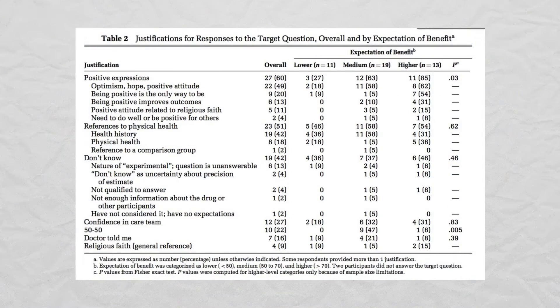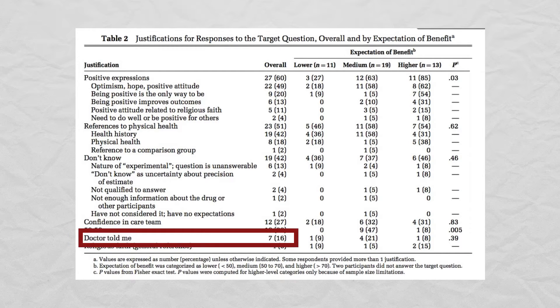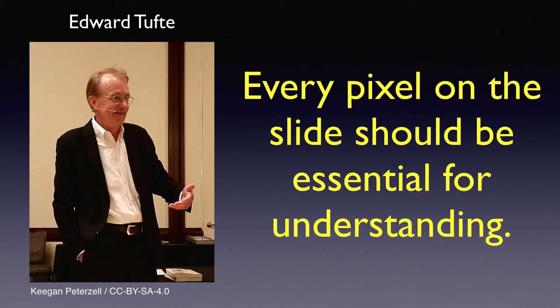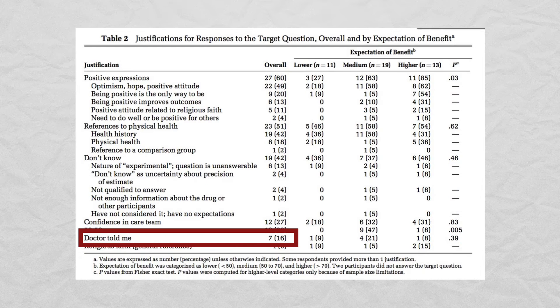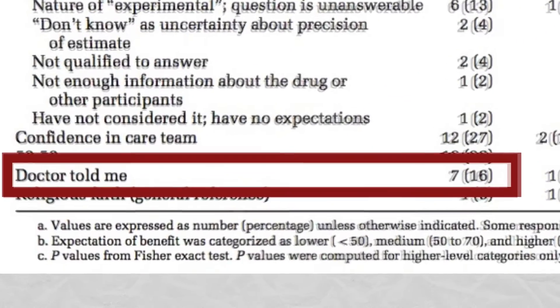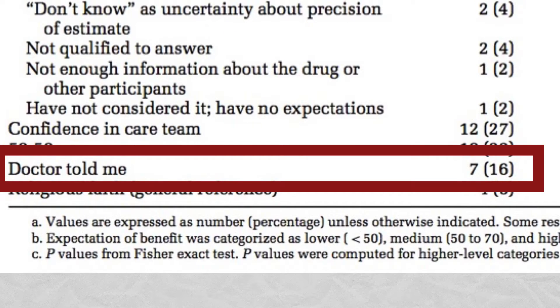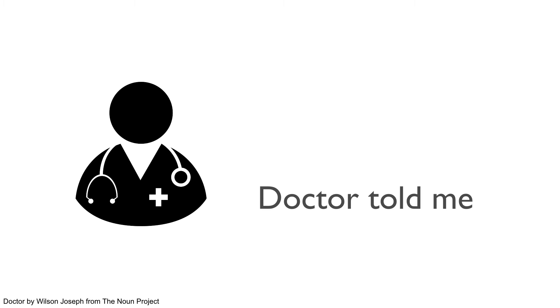Sometimes presenters try to draw attention to a single number in a table by somehow highlighting it. The problem with this strategy is that it violates Tufte's principle that we discussed earlier — every pixel on the slide should be essential for understanding. We want to show the audience only what's necessary to tell our story. In this case, let's say the important number is the percent of patients who responded that the doctor had told them. This number turned out to be much smaller than people would have expected. So we can create a simple slide that highlights this number alone, in a way that prepares the audience for what they will see and also creates a little drama as people wait to see the result.